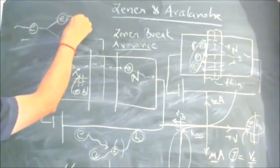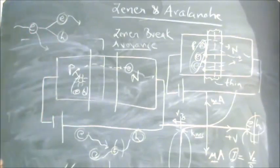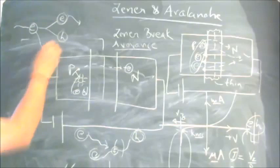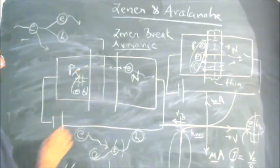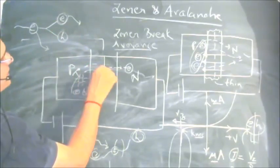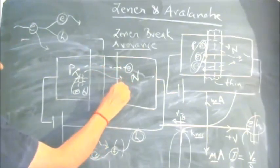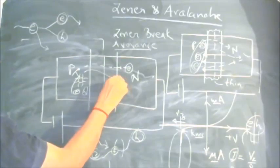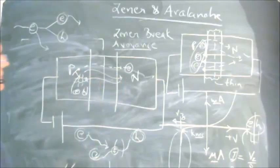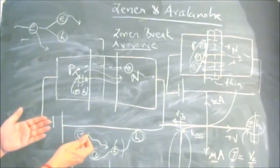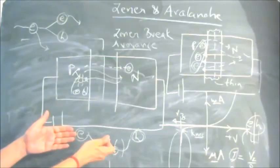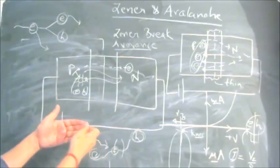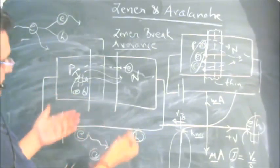These further collide with other crystal atoms in the P side and create more E-H pairs. In the process, a large number of electrons become available for crossing from the P side to the N side, and similarly a large number of holes cross from the N side to the P side. This is the avalanche effect — one electron initially creates an E-H pair, further triggering more pairs, causing a sharp rise in current.